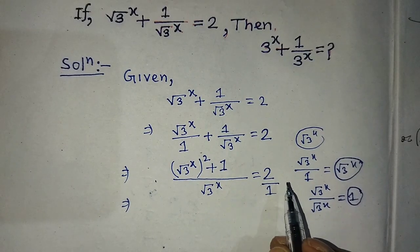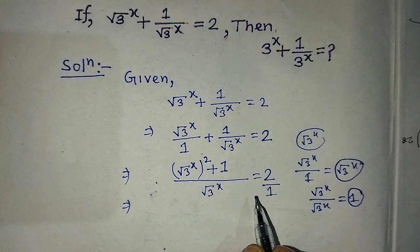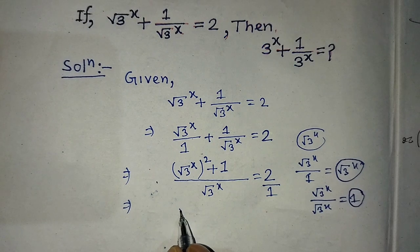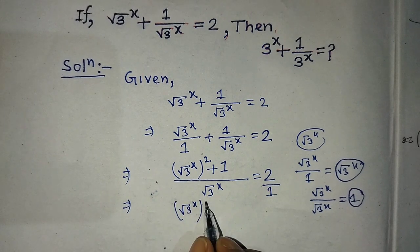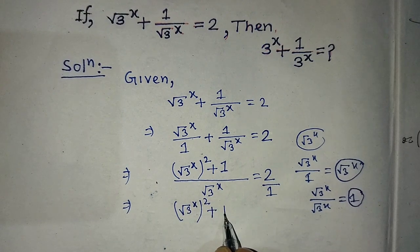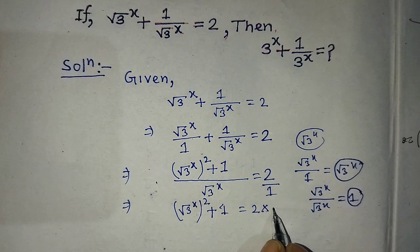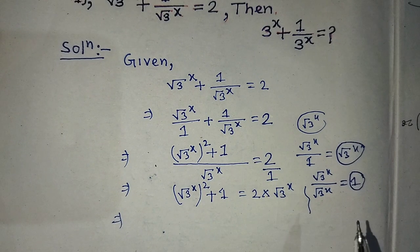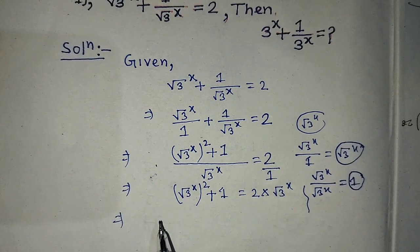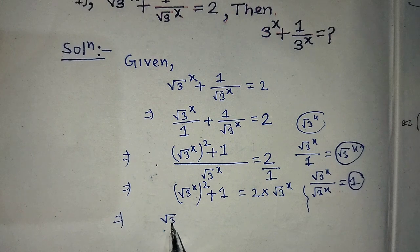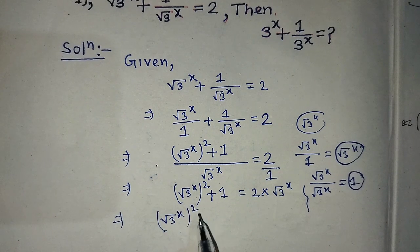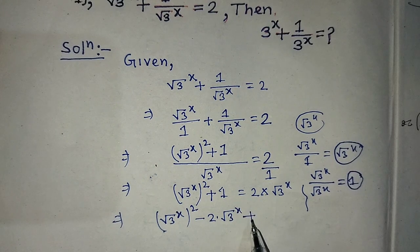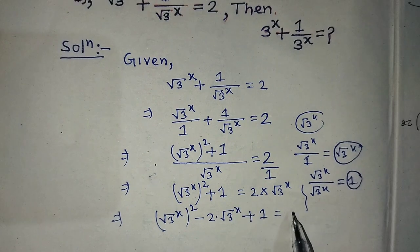On the right hand side we write 2 over 1. After applying the cross multiplication rule, we can write on the left hand side: root over of 3 whole to the power x, whole to the power 2, plus 1, is equal to 2 into root over of 3 whole to the power x. After that, we transpose 2 into root over of 3 whole to the power x from the right hand side to the left hand side, giving: root over of 3 whole to the power x, whole to the power 2, minus 2 into root over of 3 whole to the power x, plus 1, is equal to 0.